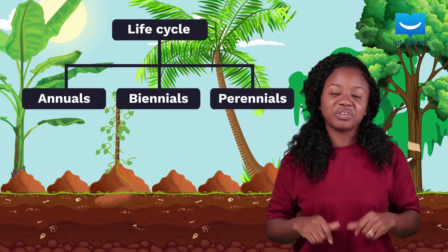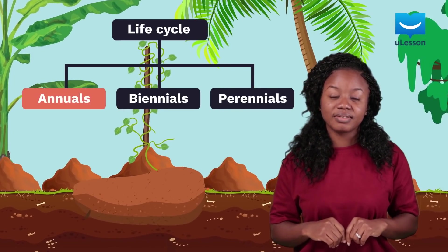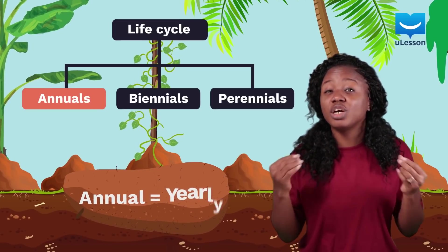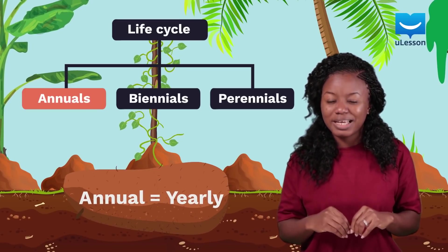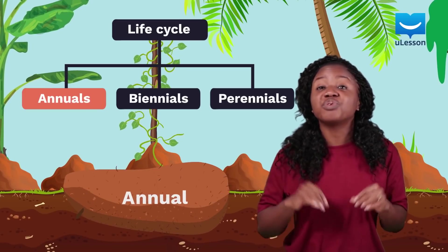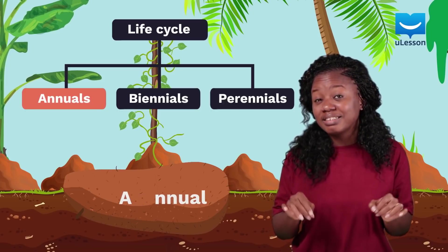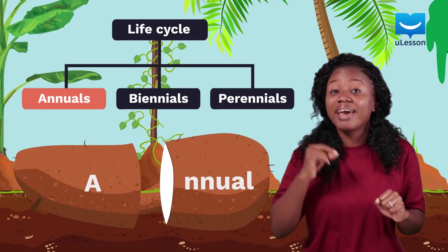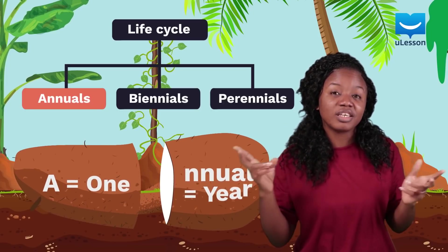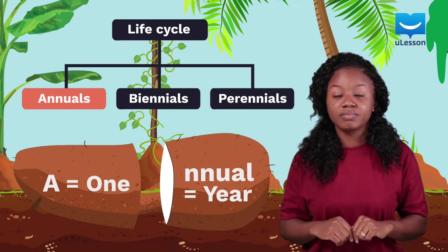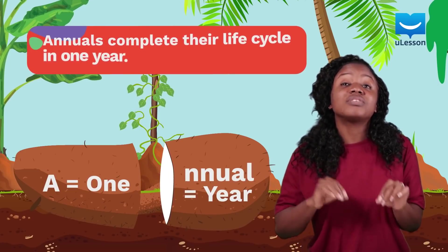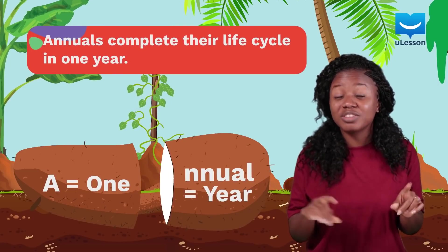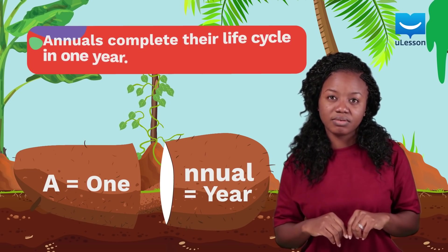Now let's chop off these words. Annual comes from a Latin word meaning yearly. An easy way to remember is annual, where A represents one year. Annuals are plants that complete their life cycles in one year or season.